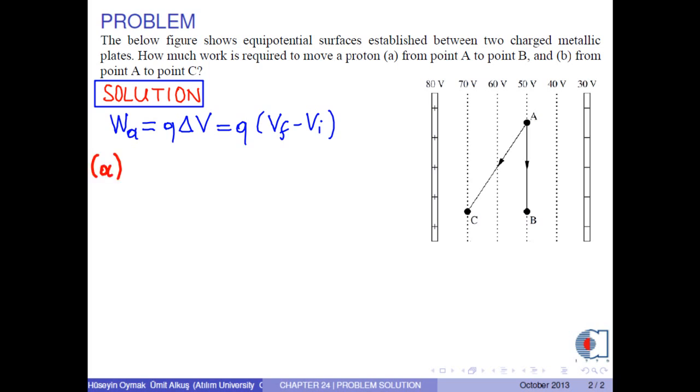In part A, the proton is initially at point A, whose potential denoted by V initial is 50 volts. And the final point of the proton is B, where the potential is again 50 volts. We know that proton has a charge of positive electron charge.